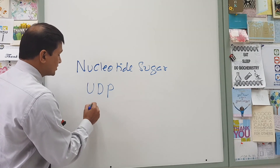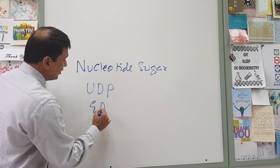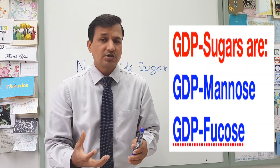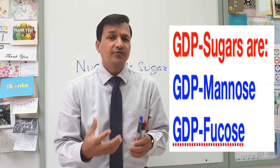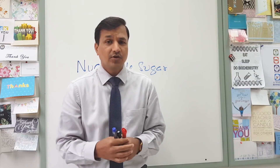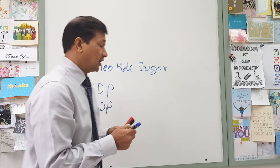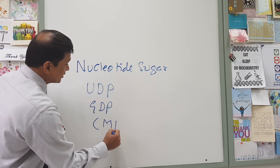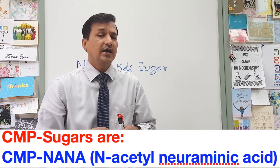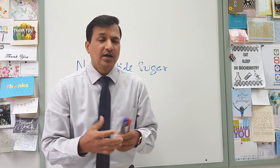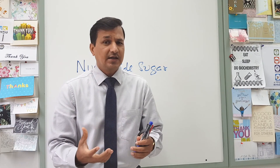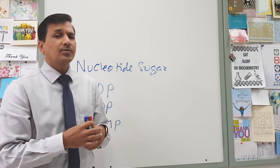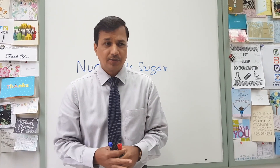Some sugars come in bound to GDP — guanosine diphosphate — such as GDP mannose and GDP fucose. Some sugars are added onto glycoproteins as CMP sugar, that is CMP-NeuAc. NeuAc is N-acetylneuraminic acid; another name for NeuAc is sialic acid. This is how sugar units are added onto a protein molecule to make a glycoprotein.